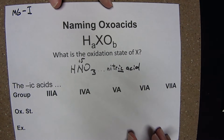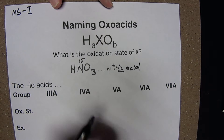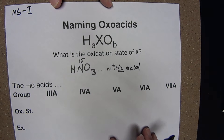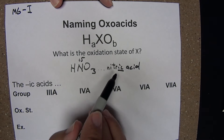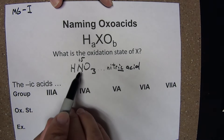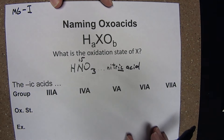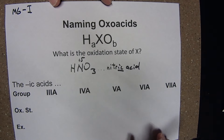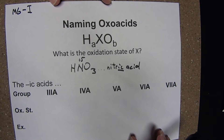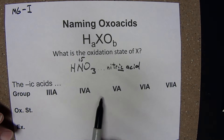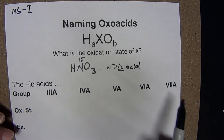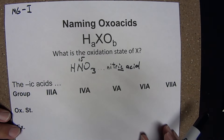Here's how I knew that. Once you're able to identify the oxidation state of X, you need to know what the ic acid is for a given X. That's going to be tied to where X is on the periodic table — specifically, what group X is in. Let's run through what the ic acids are for the various non-metal groups.